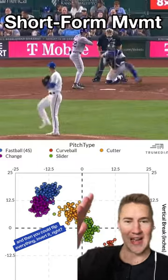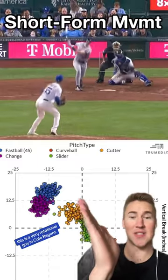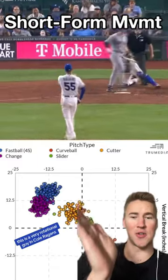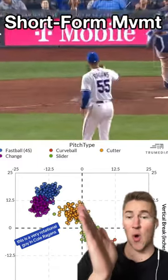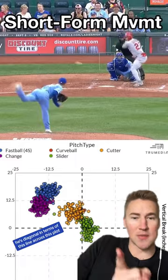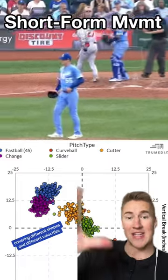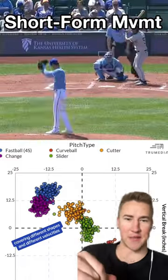And then you can flip everything, invert it — go to left-handed pitchers. This is a very rotational guy in Cole Ragans. He's diagonal in terms of this line across the plot, covering different shapes and different velocities.